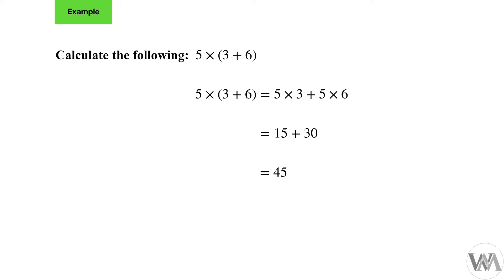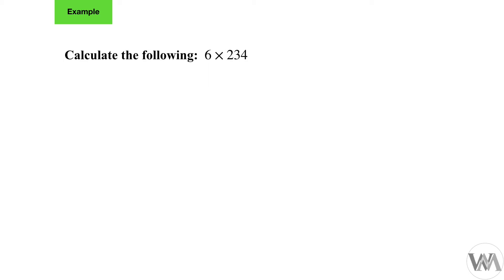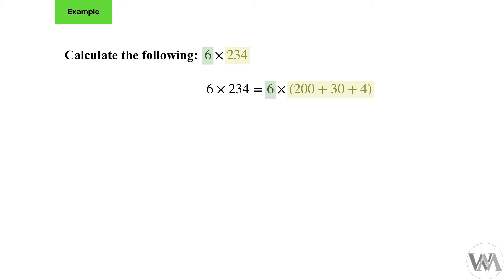Another example using the distributive law in reverse is when we have to multiply large numbers, like six times 254. It's difficult and would take a long time working in multiples of 254. But there's an easier way using the distributive law in just seconds. We take 254 and break it up into place values, grouping it as 200 plus 50 plus four — hundreds, tens, and ones grouped together — and then multiply the same number six by each one.